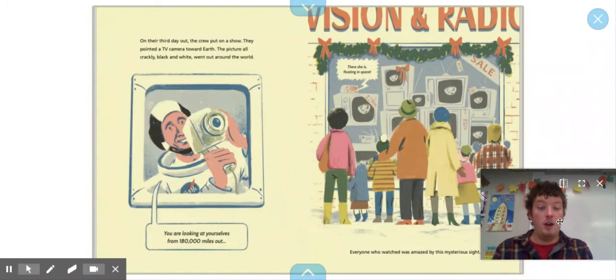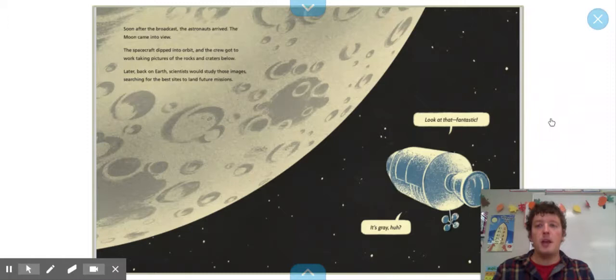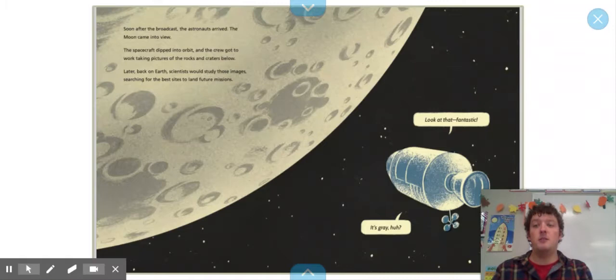Everyone who watched was amazed by this mysterious sight. Soon after the broadcast, the astronauts arrived. The moon came into view. The spacecraft dipped into orbit. And the crew got to work taking pictures of the rocks and craters below.